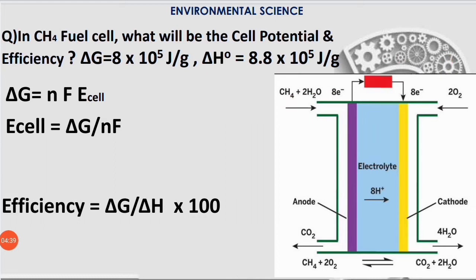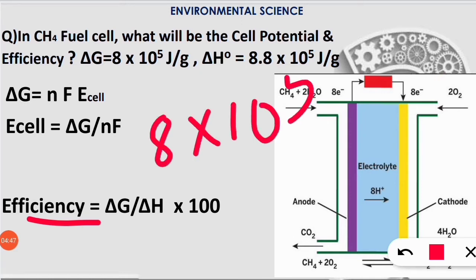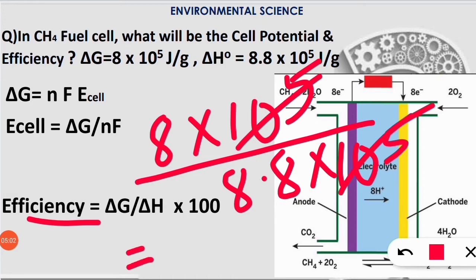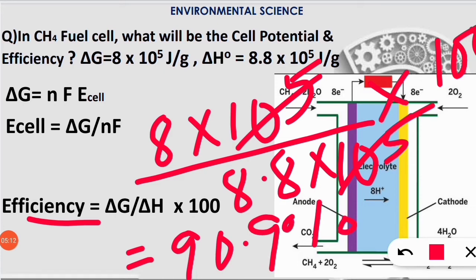ΔG = 8 × 10^5 J/g and ΔH = 8.8 × 10^5 J/g. We simply put the values to find efficiency. Write ΔG = 8 × 10^5 divided by ΔH = 8.8 × 10^5. You should write the units, but I'm not writing them here. Solve this: 10^5 cancels out, and 8 divided by 8.8 multiplied by 100 gives efficiency of 90.9%.